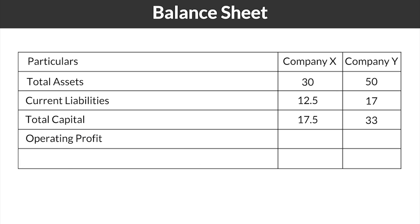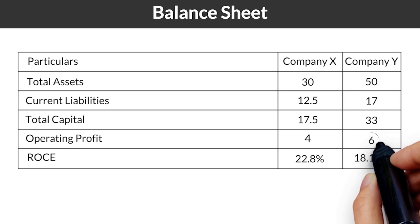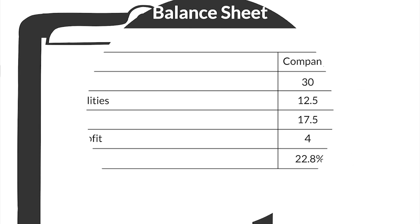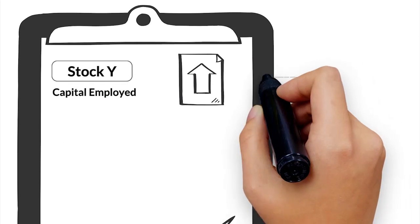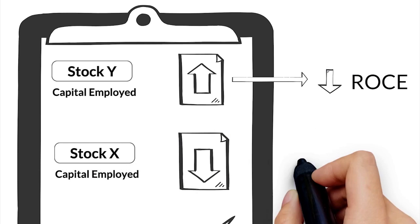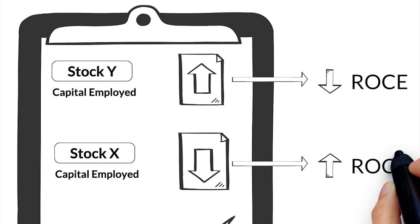Now, let us assume that the operating profit made by company X and company Y are 4 lakhs and 6 lakhs respectively. Hence, the return on capital for company X comes down to 22.8% and for company Y comes down to 18.18%. Now, it might be surprising that despite the high operating profit of company Y, ROCE is much lower. This is because the capital employed by company Y is much higher than company X, whereas company X having lower capital employed has higher ROCE.